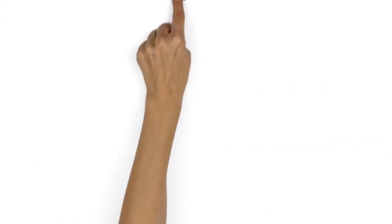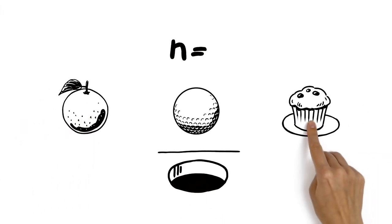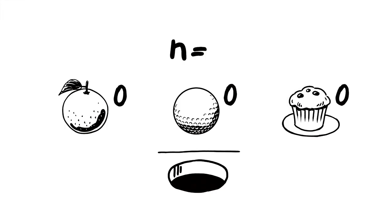One example of a topological invariant is the number of holes an object has. An orange, a ball, and a muffin all have zero holes, so they can all be assigned the topological invariant n equals zero.